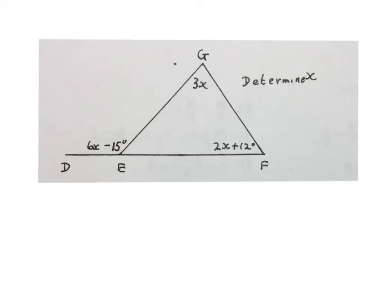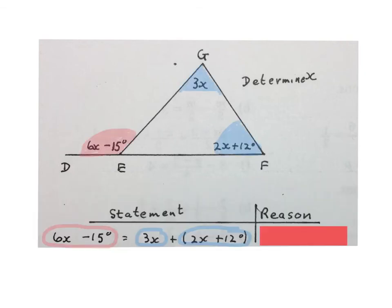The next problem looks like this. They give us this triangle GEF. They tell us the size of that angle is what you see there, the size of that angle is that, and the size of that angle is that. Determine the value of X. Then you may write 6X minus 15 degrees is equal to 3X plus 2X plus 12 degrees. So that exterior angle is equal to the sum of the two opposite interior angles. The reason: exterior angle triangle.